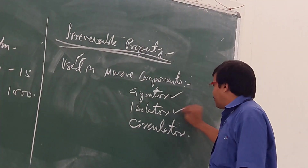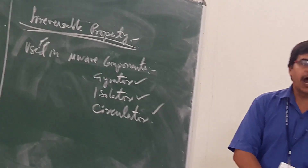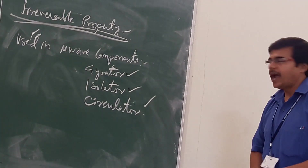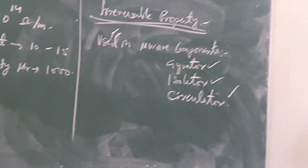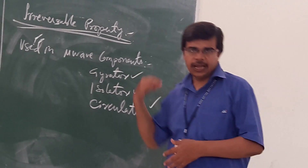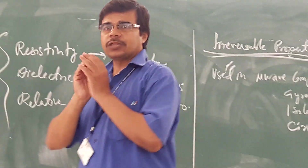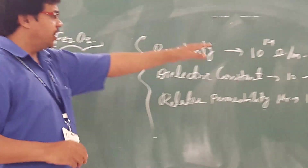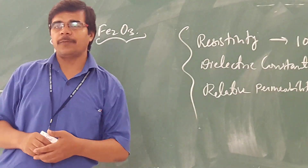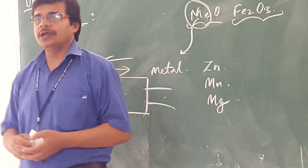Some of the microwave components using ferrite are the gyrator, isolator, and circulator. We have seen the isolator and circulator in the lab. The main raw material used in these microwave components is the ferrite material.